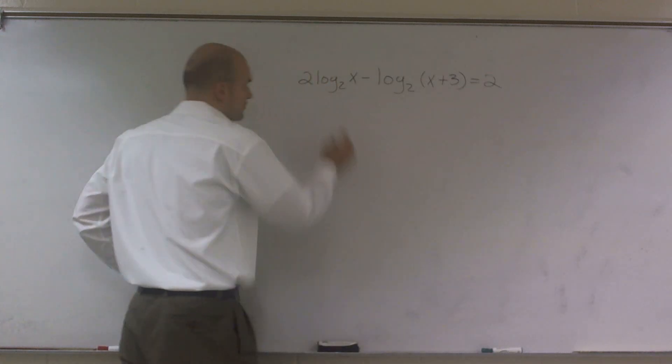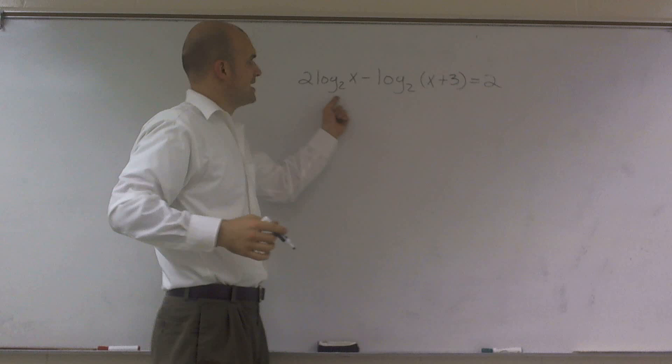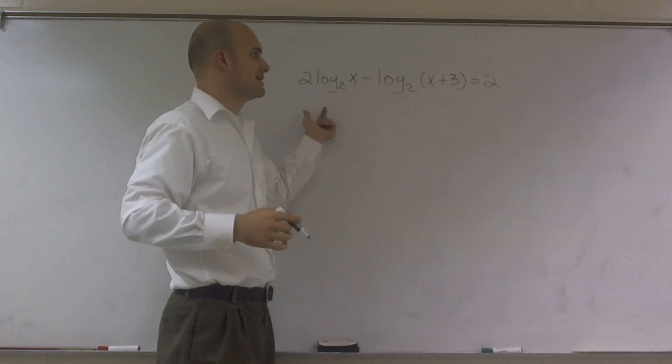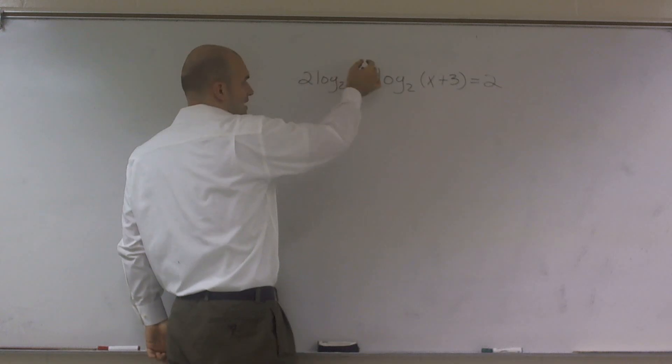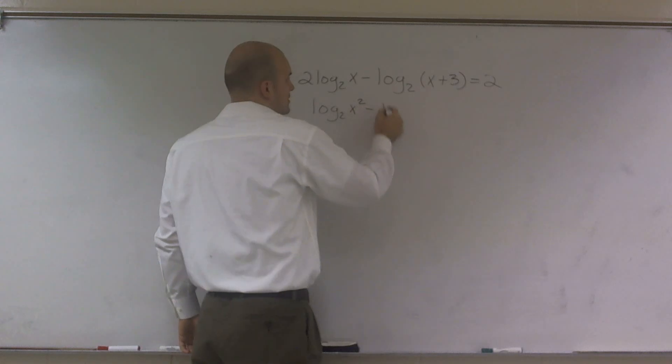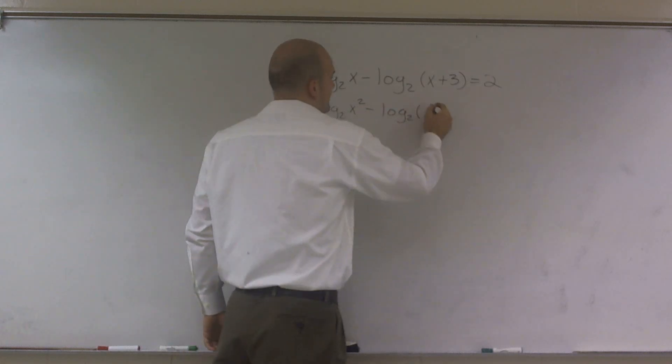And what it states is, if I have a logarithm subtracting another logarithm, and they have the same base, I can combine them by division. Now, remember, this 2 I can rewrite as an exponent. So I'm going to do that first. I'm going to write log base 2 of x squared minus log base 2 of x plus 3 equals 2.